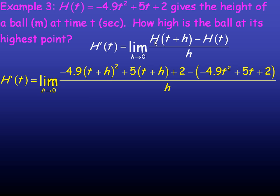When I go to find capital H of t plus h, I'm putting t plus h in place of t. So it's negative 4.9 times t plus h squared, which is this quantity here. When I put this in place of time, 5 times t plus h, plus 2. So up to here, those first three parts, that's the H of t plus little h, minus h of t, which is all in the second bracket, subtracted here.